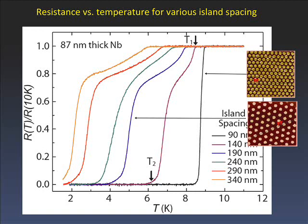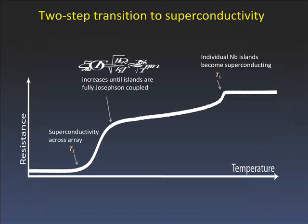For closely spaced islands, we get transitions near 9 Kelvin, telling us we're not suppressing anything with the gold. As we space the islands further, this transition is suppressed to lower temperatures. You can see it's a two-step transition: a high-temperature transition and then a low-temperature transition. This two-step transition is expected: first you get the Tc of the individual islands, and then as temperature is lowered, the normal metal coherence length increases until it's equivalent to the spacing between islands, the islands are coupled, and you get superconductivity across the array.